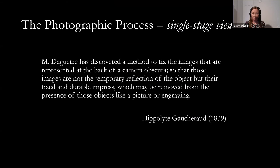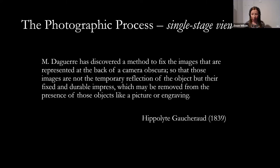Back in the early 19th century, we learn that Monsieur Daguerre had discovered a method to fix the images represented at the back of a camera obscura — images not as temporary reflections of the object but fixed and durable, which may be removed from the presence of those objects like a picture or engraving. This is the motivating fantasy that the pioneers of photography tell us about, and I want to say this is the origin of the single-stage view of photography — and in crucial respects, it is just a fantasy.